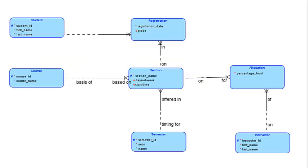That completes our ER diagram for this situation. We could obviously add more complexity, but we're going to keep this ER diagram and now see how to migrate it and make it into a database design. We'll consider every single entity type one by one, converting each into a table. I'll first start with the simple entity types — student, course, semester, instructor — because they have no foreign keys since they are on the one side of each relationship. Then we'll come to the complex ones which do have foreign keys.